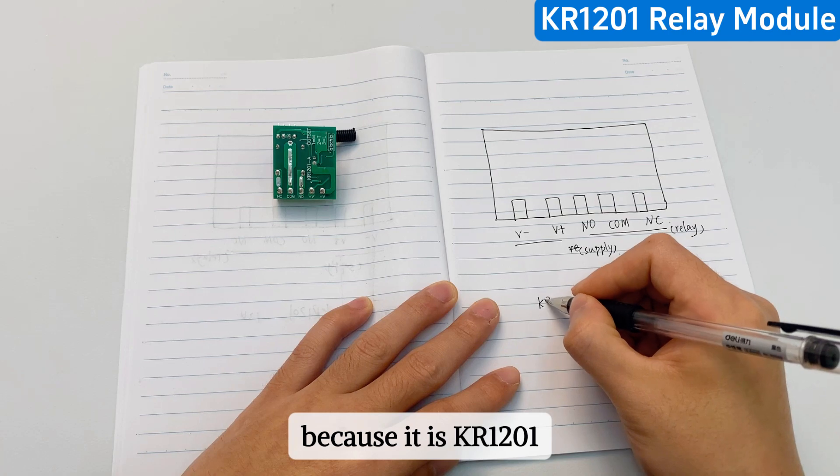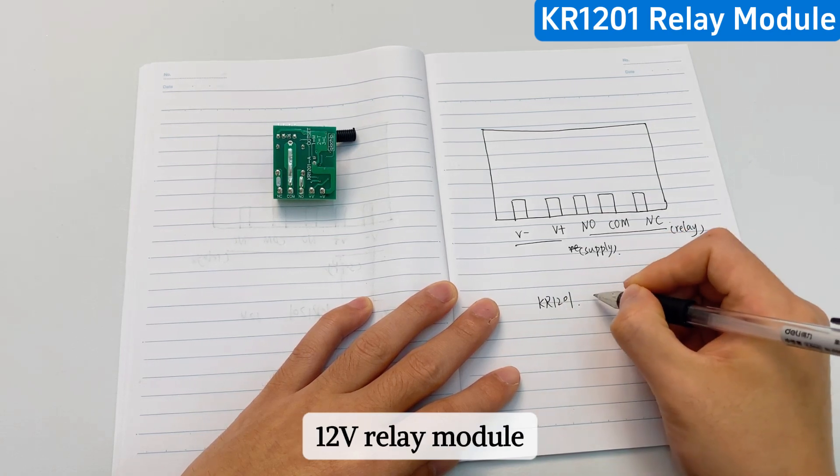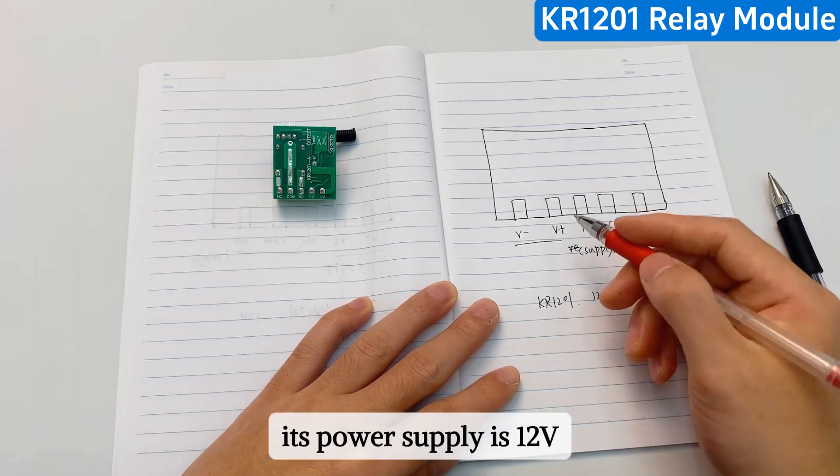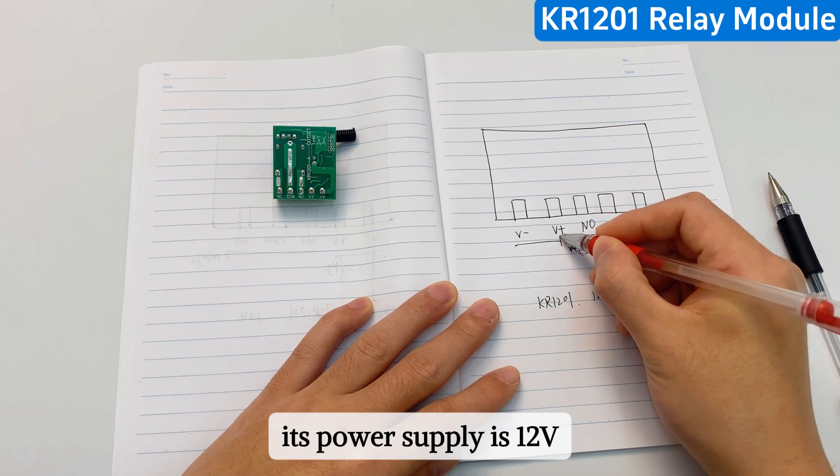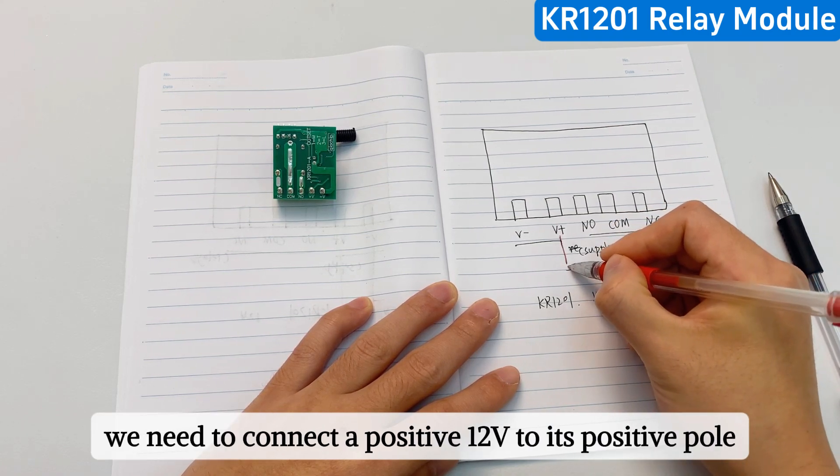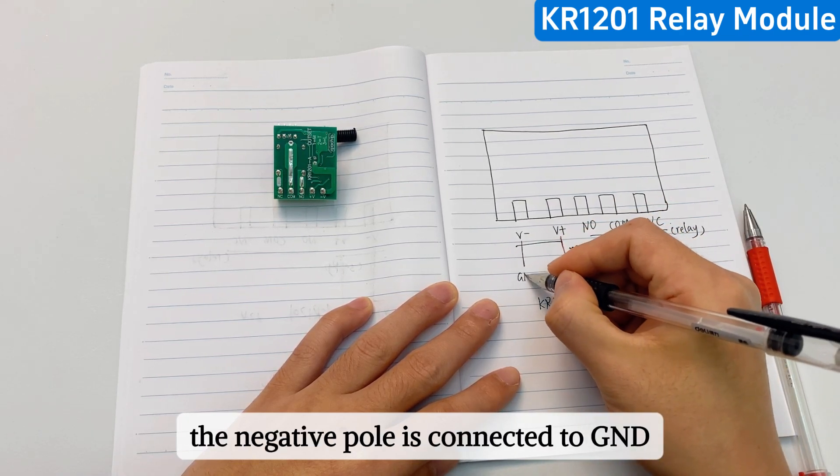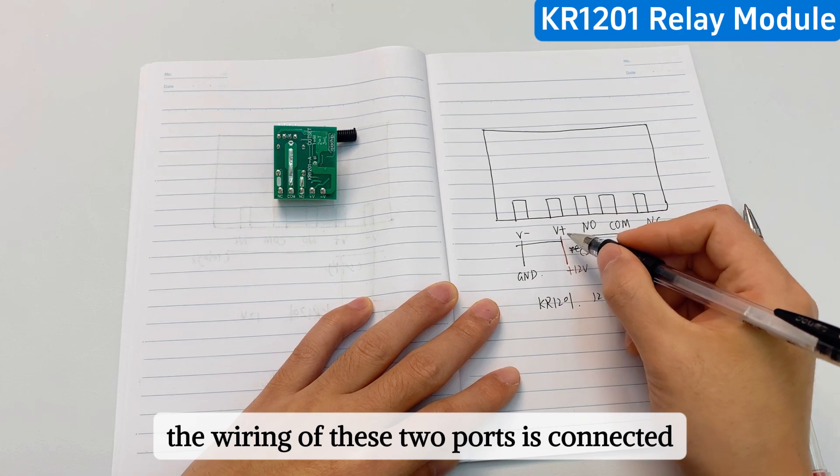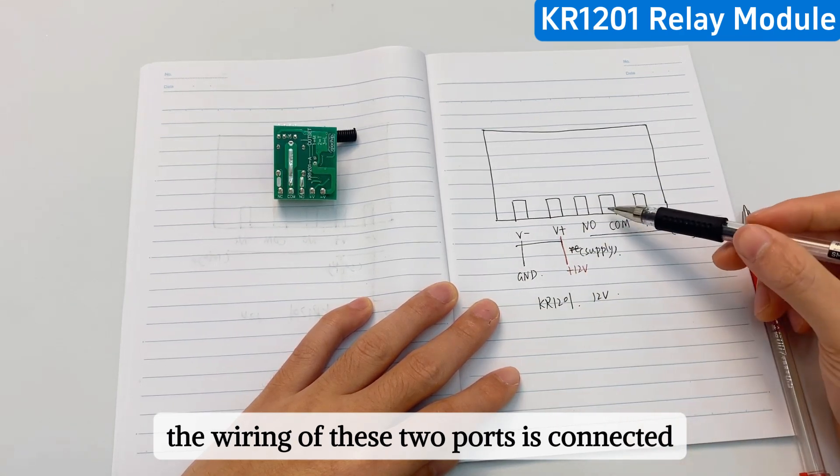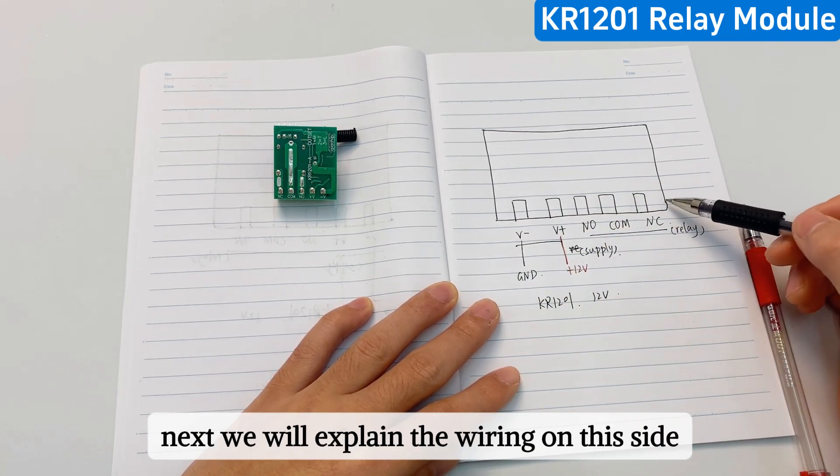Because it is KR-1201, 12 volt relay module, its power supply is 12 volts. We need to connect a positive 12 volt to its positive pole. The negative pole is connected to GND. The wiring of these two ports is connected. Next we will explain the wiring on this side.